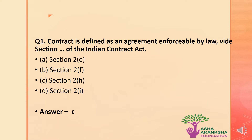The first question is: the contract is defined as an agreement enforceable by law under which section of the Indian Contract Act? The options are: A) Section 2(e), B) Section 2(f), C) Section 2(h), or D) Section 2(i). The correct answer is option C — the contract is defined as an agreement enforceable by law under Section 2, clause (h) of the Indian Contract Act.